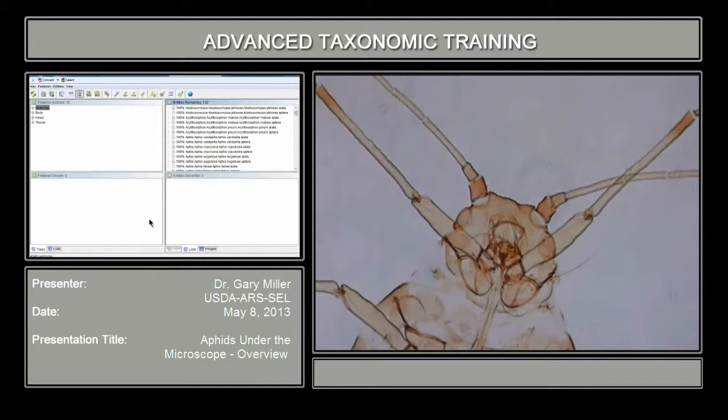Today we're going to explore the wonderful world of aphids, and hopefully be able to make some identifications and work our way around aphid morphology, getting some ideas on what structures are important for aphid identification and determinations. Before you can start doing any kind of identifications, you need to make a microscope slide mount, and that's for your first IDs.